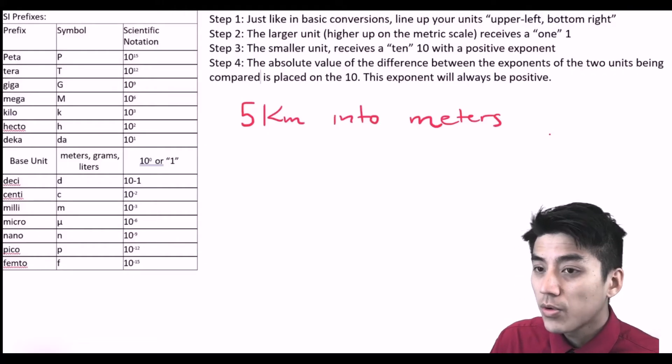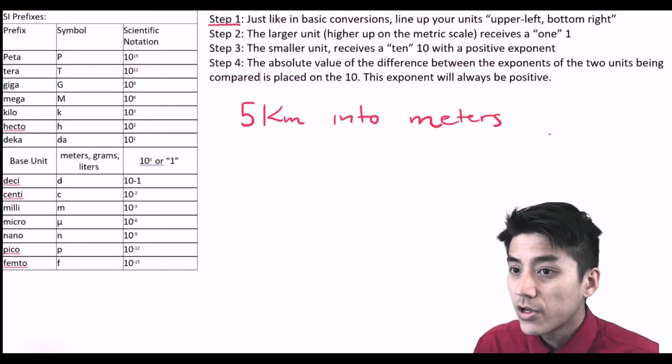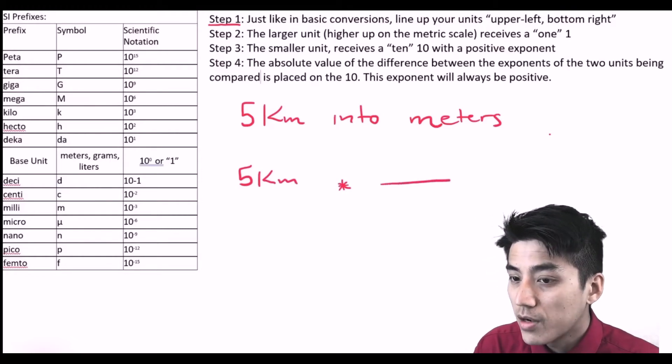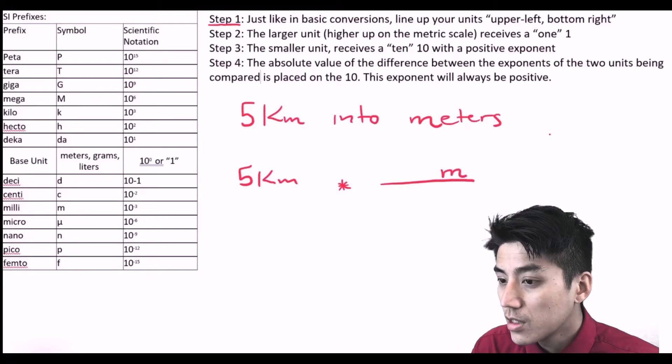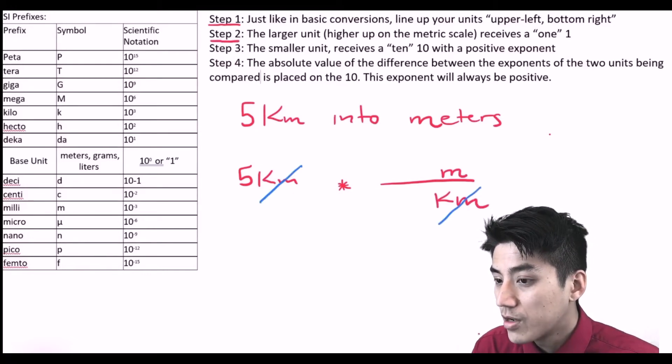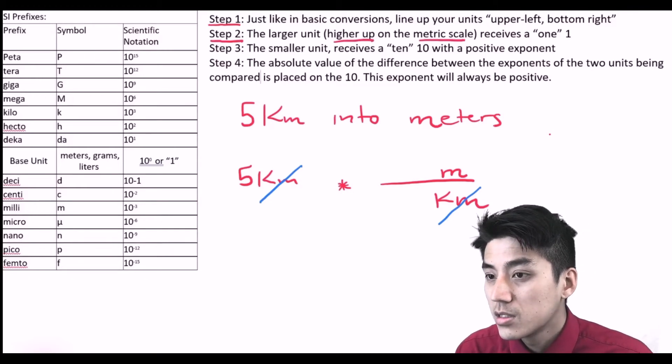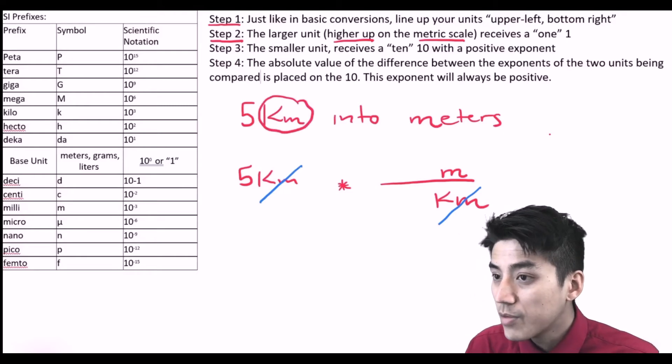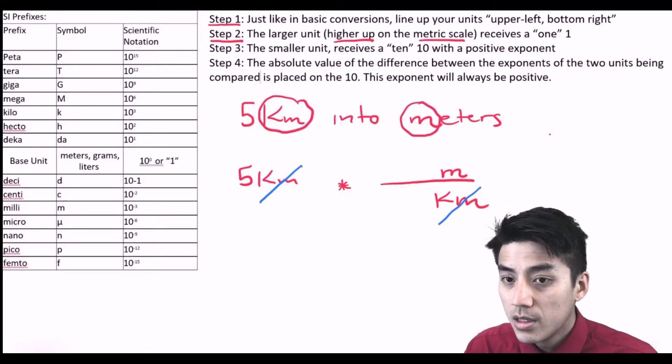Let's try the sample problem. You're being asked to convert 5 kilometers into meters. Step 1 says, just like in basic conversions, line up your units upper left and bottom right. I'm going to go times sign, draw a line, and put kilometers upper left and bottom right like that so that they cancel out. You're being asked to change into meters. Step 2, the larger unit, the one that's higher up on the metric scale, gets a 1.